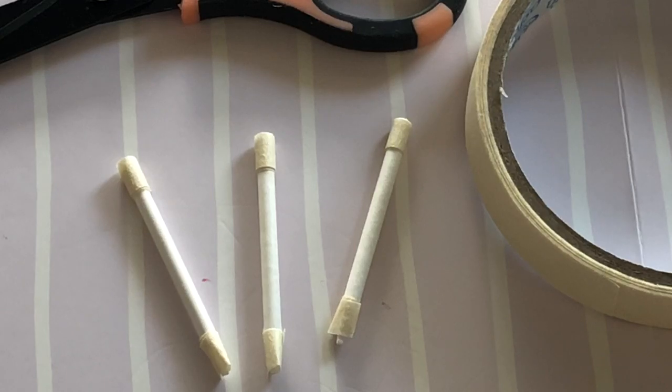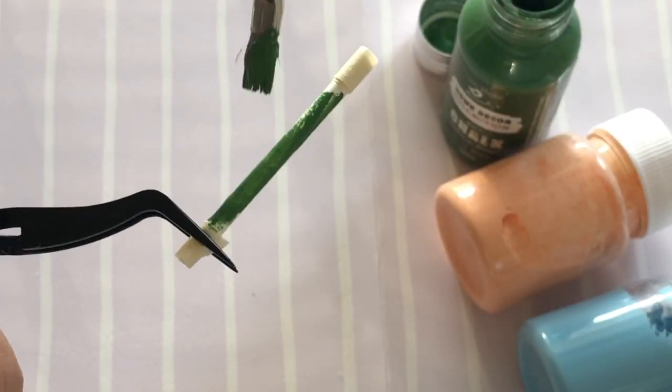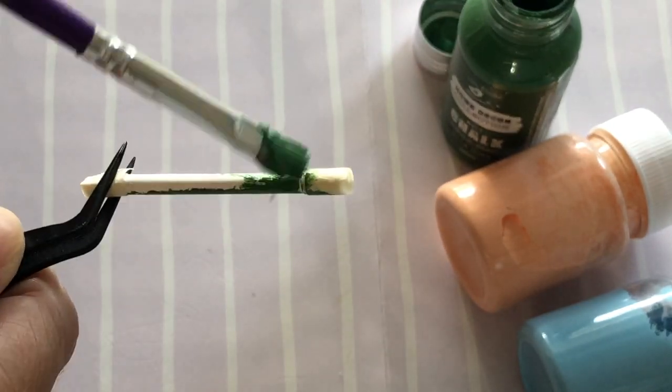Use low tack tape to mask the pencil tip and also the top where the rubber will be. Paint the centre of the pencil one green, one blue and one peach.